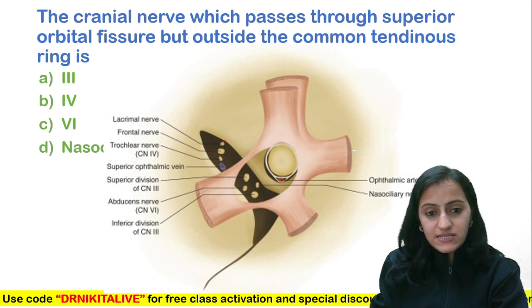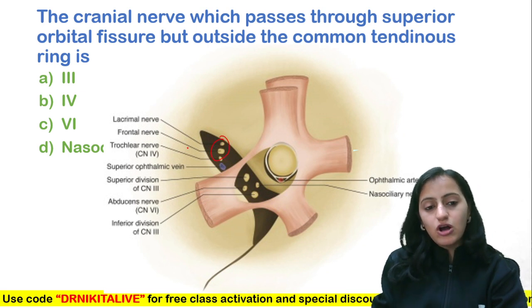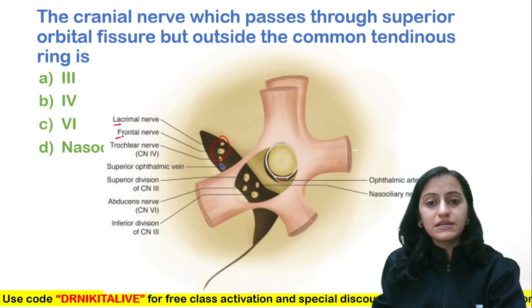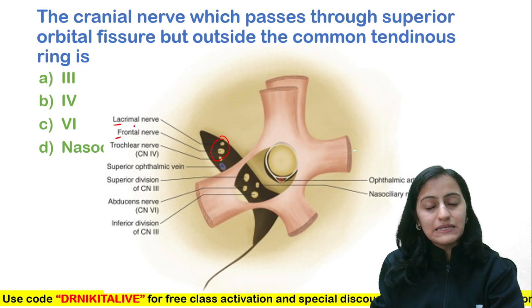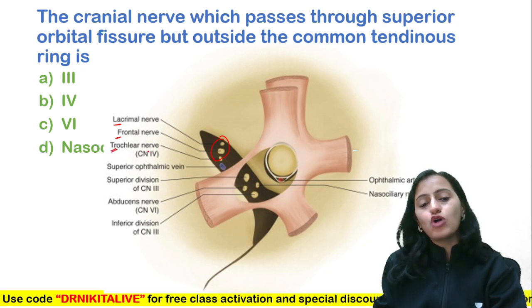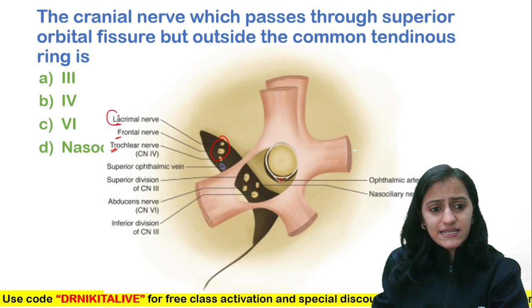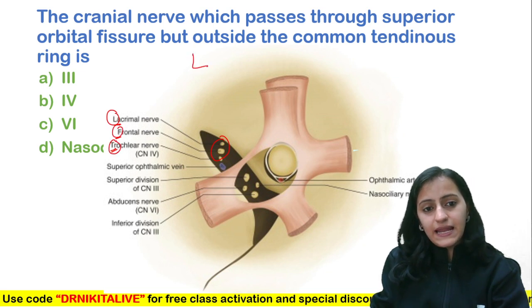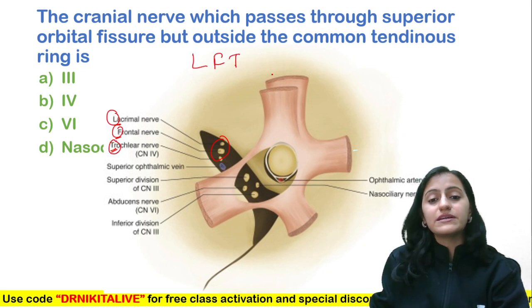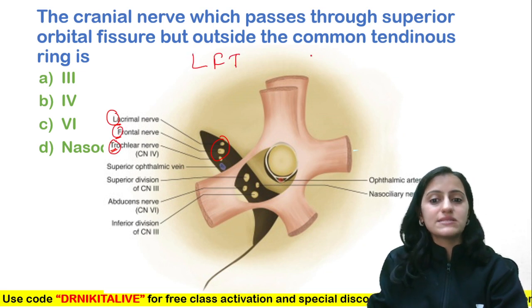What is outside? Above the common tendinous ring is the lacrimal nerve, the frontal nerve — both branches of the ophthalmic, the first branch of the trigeminal — and the trochlear nerve. So basically it is LFT: lacrimal, frontal, and trochlear which are outside.